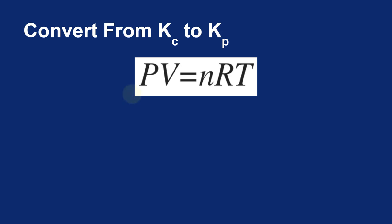Now you can convert from a Kc value to a Kp value. You can convert from an equilibrium constant based on concentration to an equilibrium constant based on pressure, and it comes from the ideal gas law, PV equals nRT.